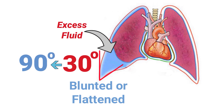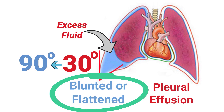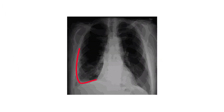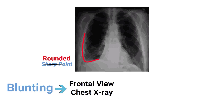The most common example of costophrenic angle blunting is when a pleural effusion is present. The pooling of fluid in the lungs causes this angle to appear more rounded rather than forming a sharp point.